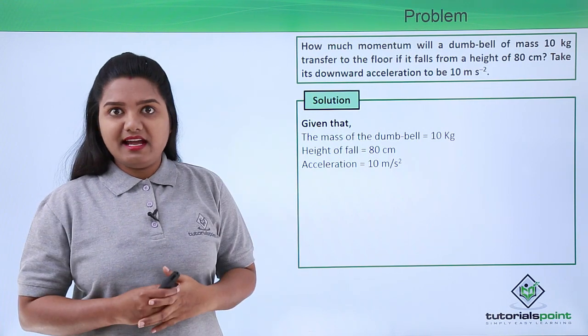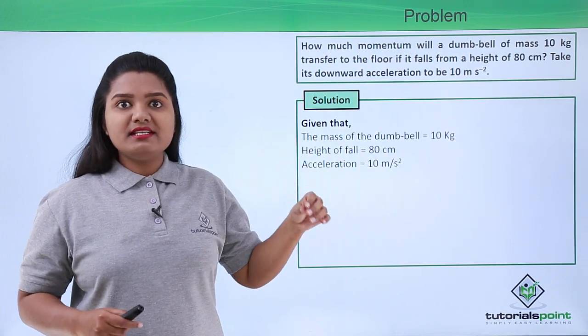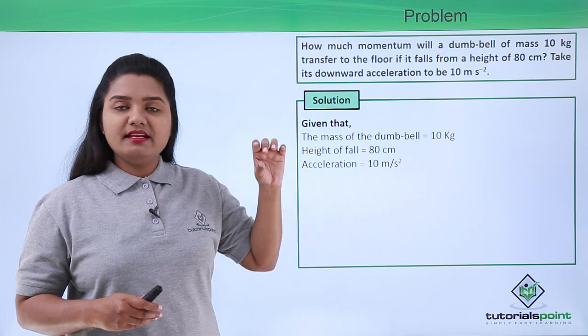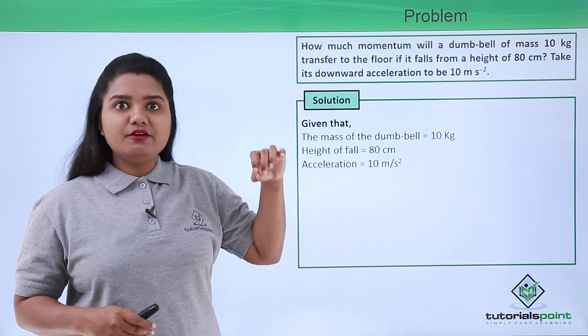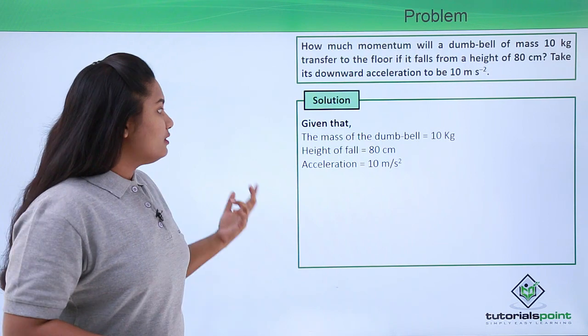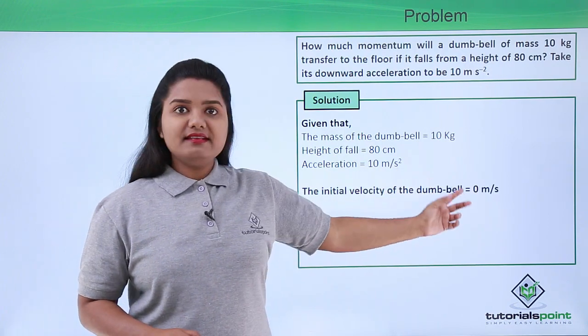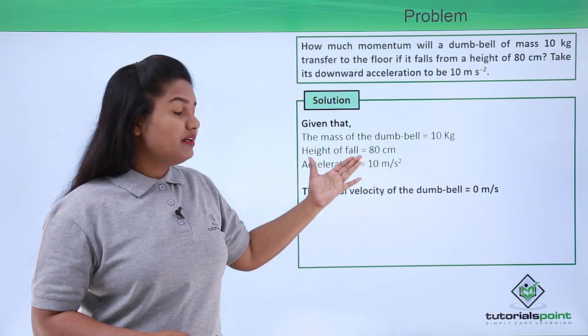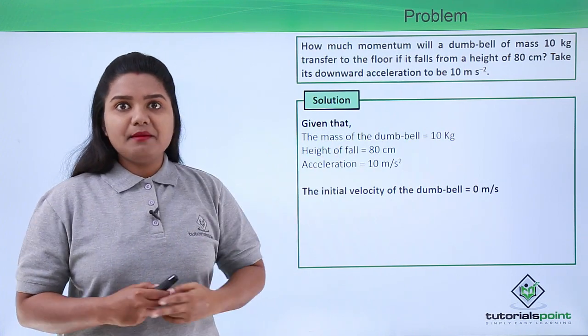When we drop a dumbbell from a certain height, the initial velocity is zero since we have not imparted any force to it. We have simply dropped it, so the initial velocity of the dumbbell is 0 meters per second.